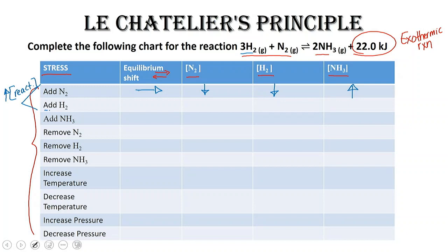Adding hydrogen gives the same situation because hydrogen is also a reactant. If I add hydrogen, the equilibrium shifts to the right to produce more product. That uses up nitrogen and hydrogen so their concentrations go down, and the concentration of ammonia goes up.